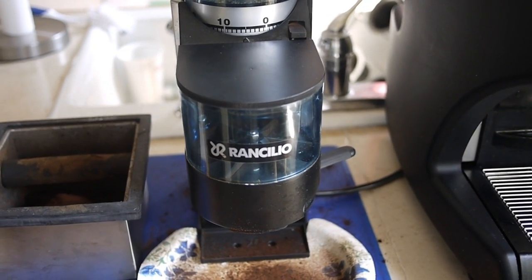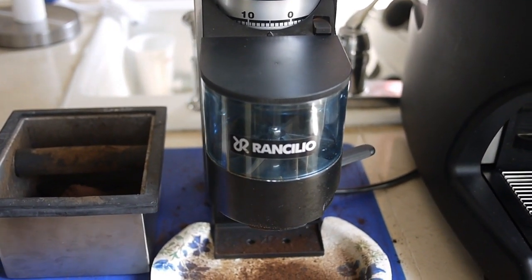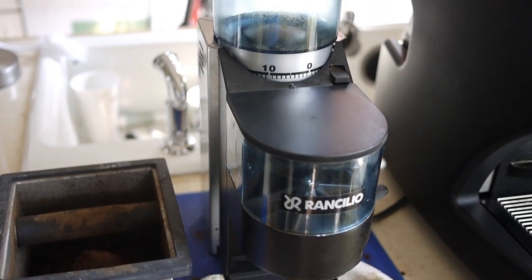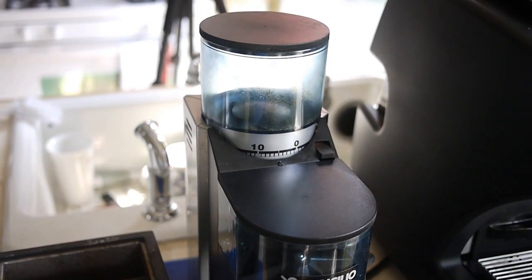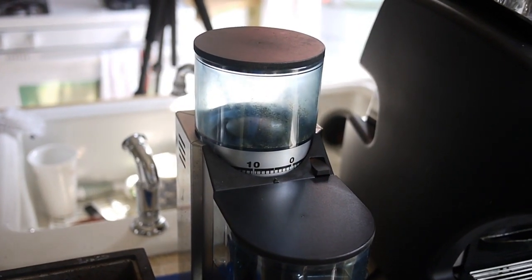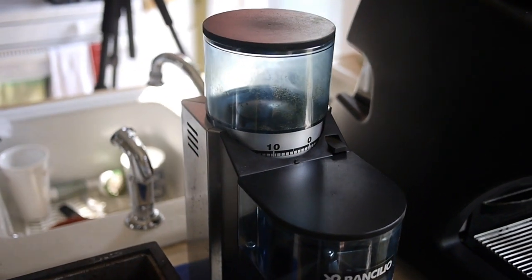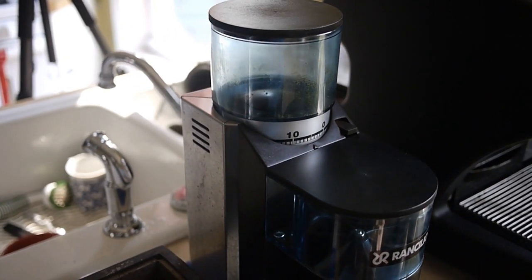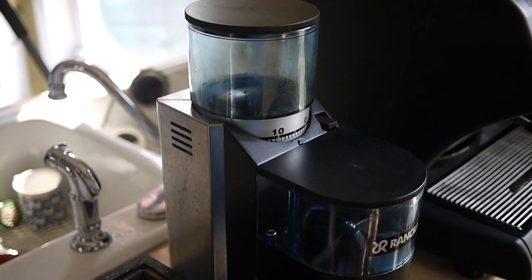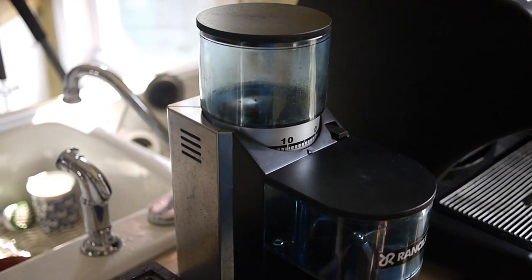They go so well together, in fact, you can buy a chrome stand that holds both of them along with a couple of small drawers below. And as I mentioned, the Rocky is the most popular espresso grinder on the market, and as far as I know, that's true, and with very good reason.